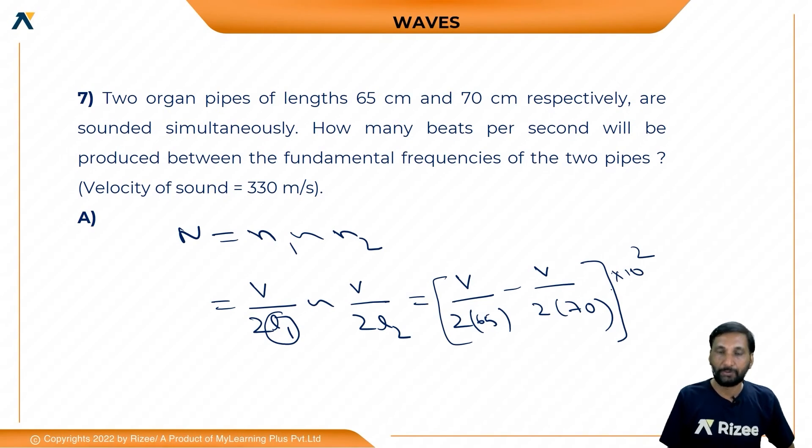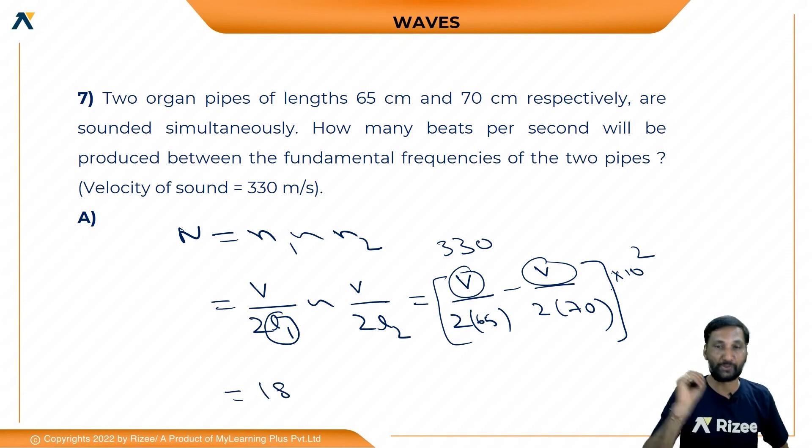So this equals the beats number. In this problem, the velocity value is 330 m/s. So in place of v we substitute 330, for L1 and L2 we substitute their values, and we get 18 beats.